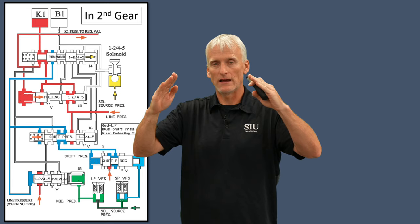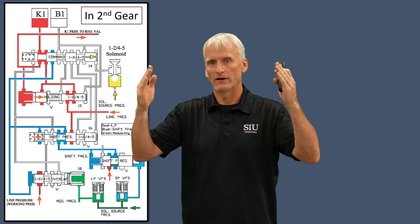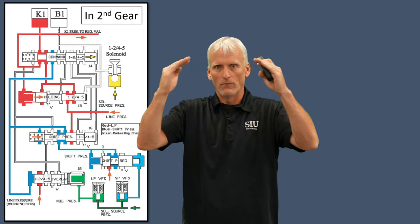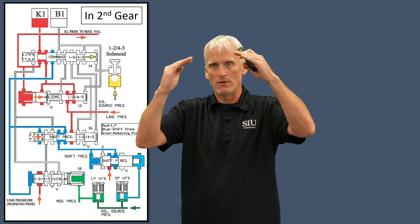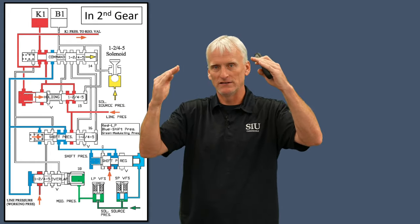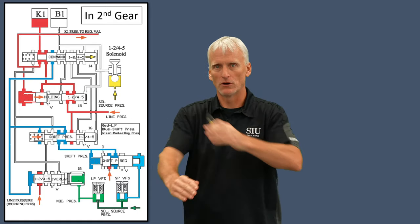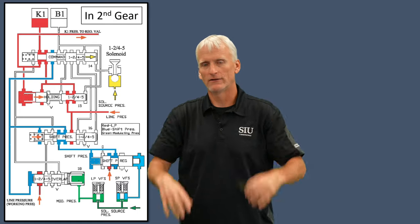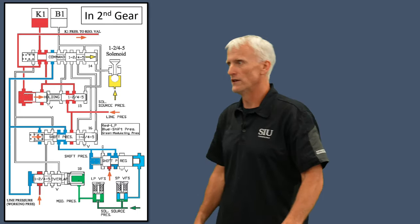If there was no overlap, you'd get a flare — nothing applied in the middle. And if both clutches were on at the same time and one didn't release, that section would bind up. So they need to have overlap — it's essential for smooth shifts.